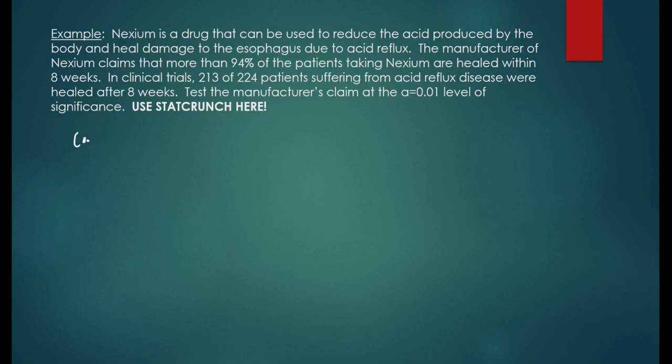Still have to check the conditions in this problem. The first condition is n times p times the quantity 1 minus p has to be at least 10. The sample size in the problem is 224 patients. And p is the population proportion, which is 94% or 0.94.